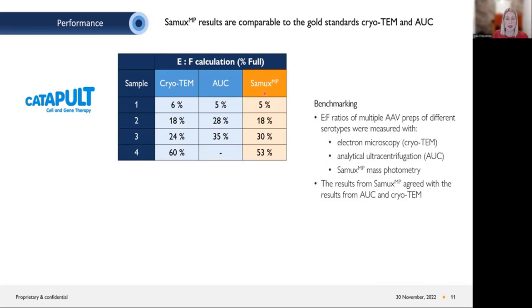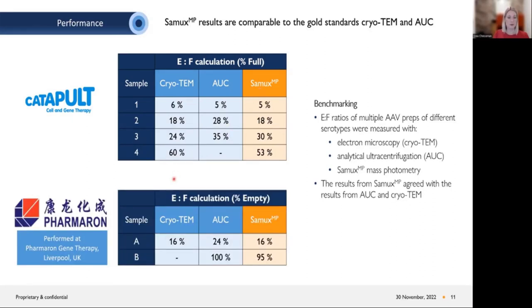We benchmarked the empty/full ratio from the SAMXMP against the gold standards: cryo-TEM and AUC. This was done in collaboration with the Cell and Gene Therapy Catapult in London. Across different empty/full ratios from 6 to 60% full, we obtained very similar results to cryo-TEM and AUC, showing our measurement is accurate. We also did a similar study with Farmeron, comparing two samples with SAMXMP against cryo-TEM and AUC, and at very high empty ratios, our results again compared nicely to the gold standards.